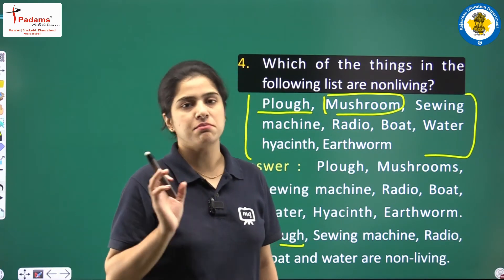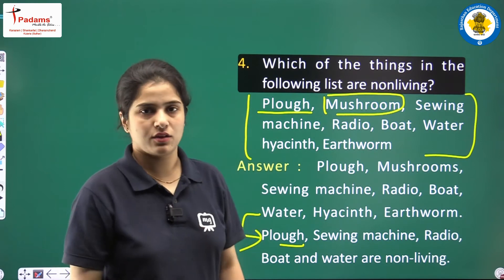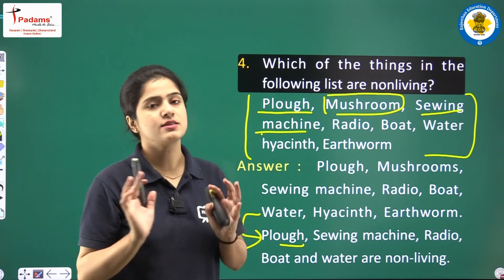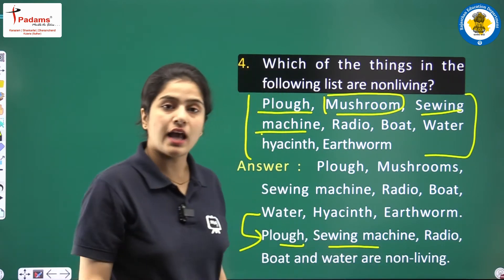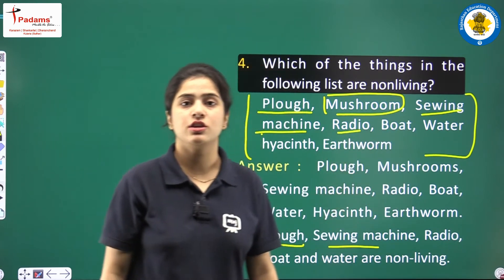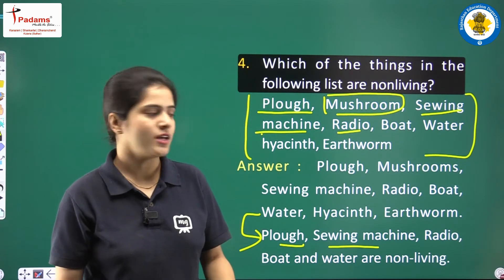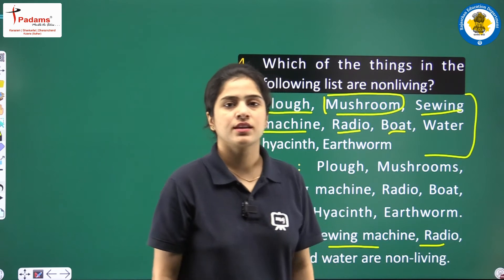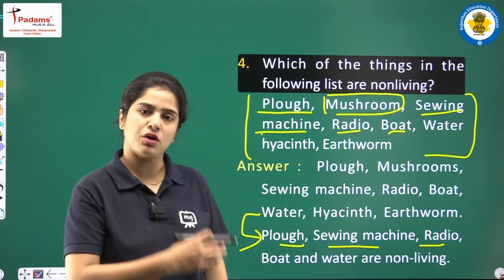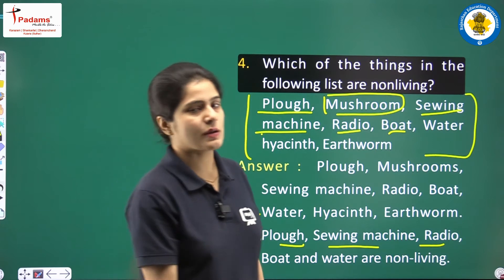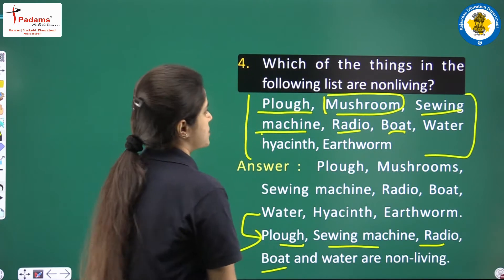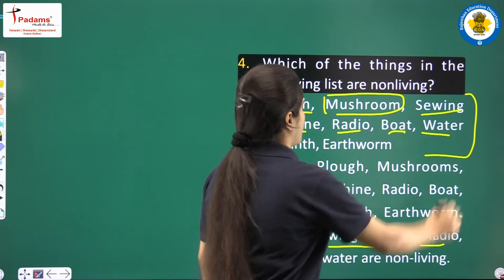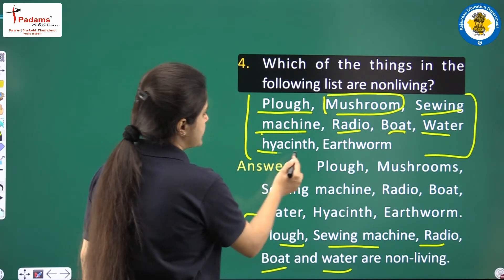So from the list, the non-living things are: plough, sewing machine, radio, boat, and water. Water hyacinth and earthworm are both living beings.